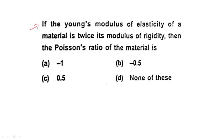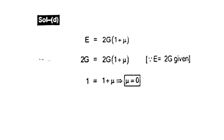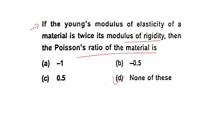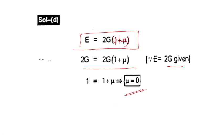Next question: If the Young's modulus E is twice the modulus of rigidity G, find Poisson's ratio. Using E = 2G(1 + μ): if E = 2G, then 2G = 2G(1 + μ), so 1 + μ = 1, giving μ = 0. The answer is 0 — none of the other options.